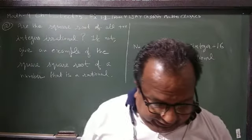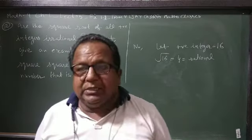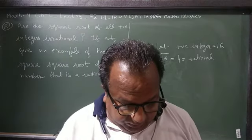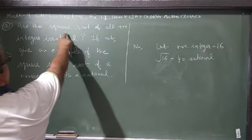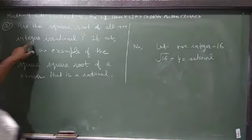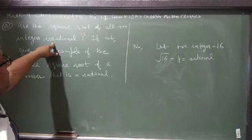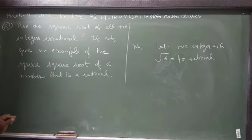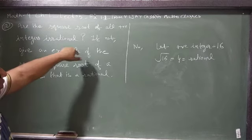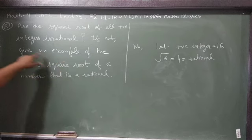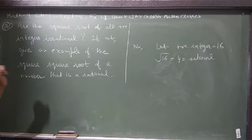Second sum, exercise 1.2: Are the square roots of all positive integers irrational? If I take any positive integer, is its square root irrational or not? Many of them give an example of the square root of a number that is rational.